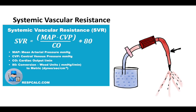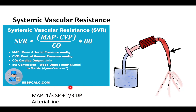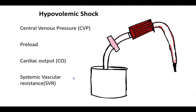Systemic vascular resistance (SVR) has no direct measurement. It is calculated as: SVR = (mean arterial pressure − central venous pressure) / cardiac output × 80. Mean arterial pressure is one-third systolic plus two-thirds diastolic pressure, or measured continuously via an arterial line. The factor 80 converts from Wood's units (mmHg/L/min) to metric units (dynes·sec/cm⁵).